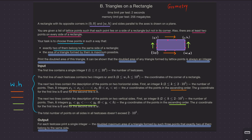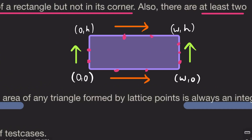Alright, welcome back everyone. Let's solve this question: triangles on a rectangle. This is a simple question based on geometry. We are given a rectangle with opposite corners at (0,0) and (W,H), with sides parallel to the axes drawn on a plane.